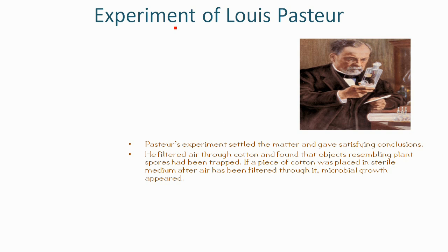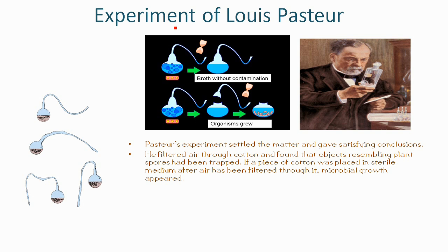Pasteur set up two experiments. In both, he added nutrient broth to flasks. He bent the neck of the flasks into an S-shape and then boiled the broth to kill any existing microbes.